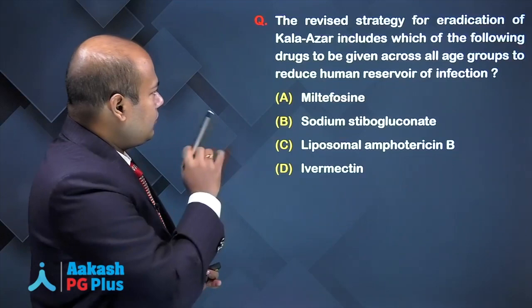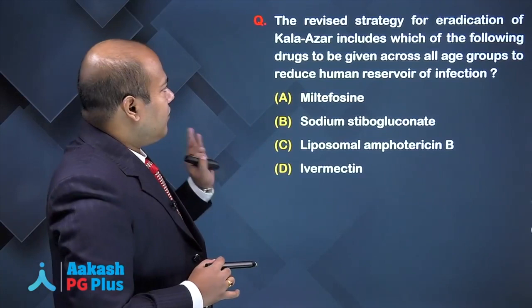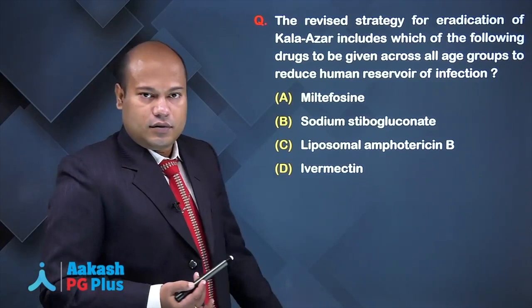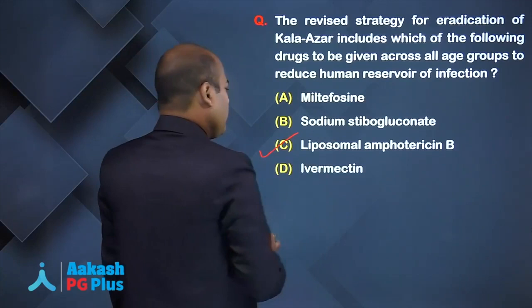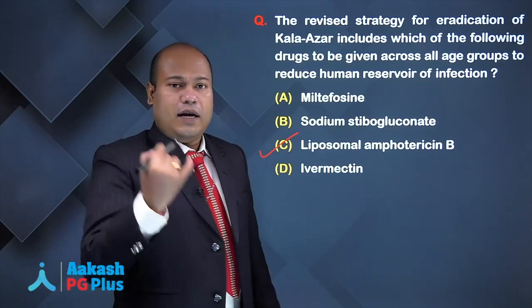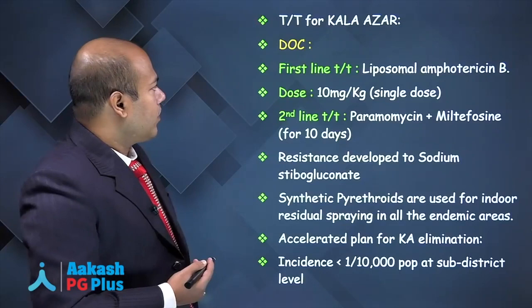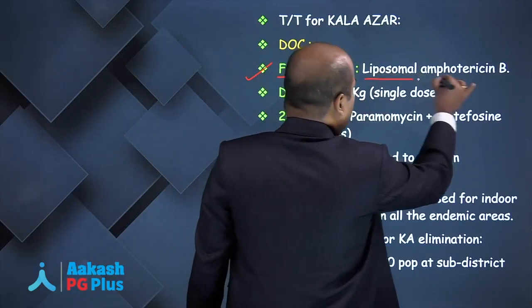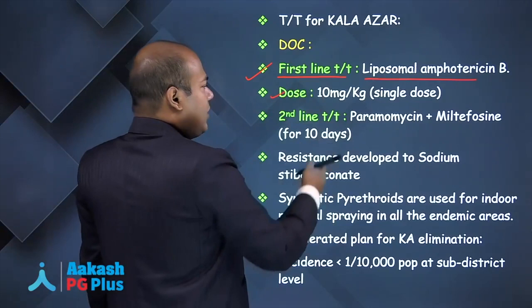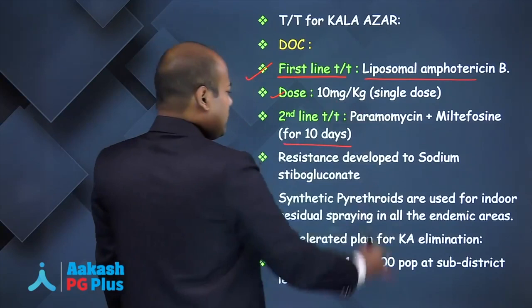A new question: the revised strategy for eradication of Kalazar — which drug is given across all age groups to reduce the human reservoir? According to latest guidelines, the answer is liposomal amphotericin B — the first line treatment for Kalazar, given as a single dose of 10 mg/kg. Second line treatment is paromomycin plus miltefosine, given for 10 days.